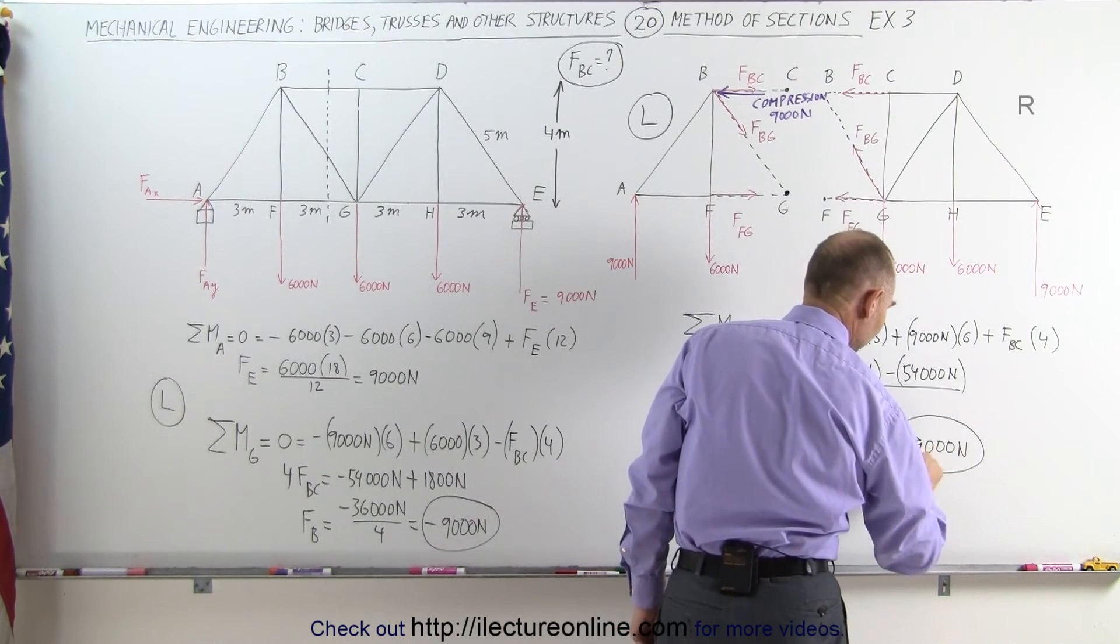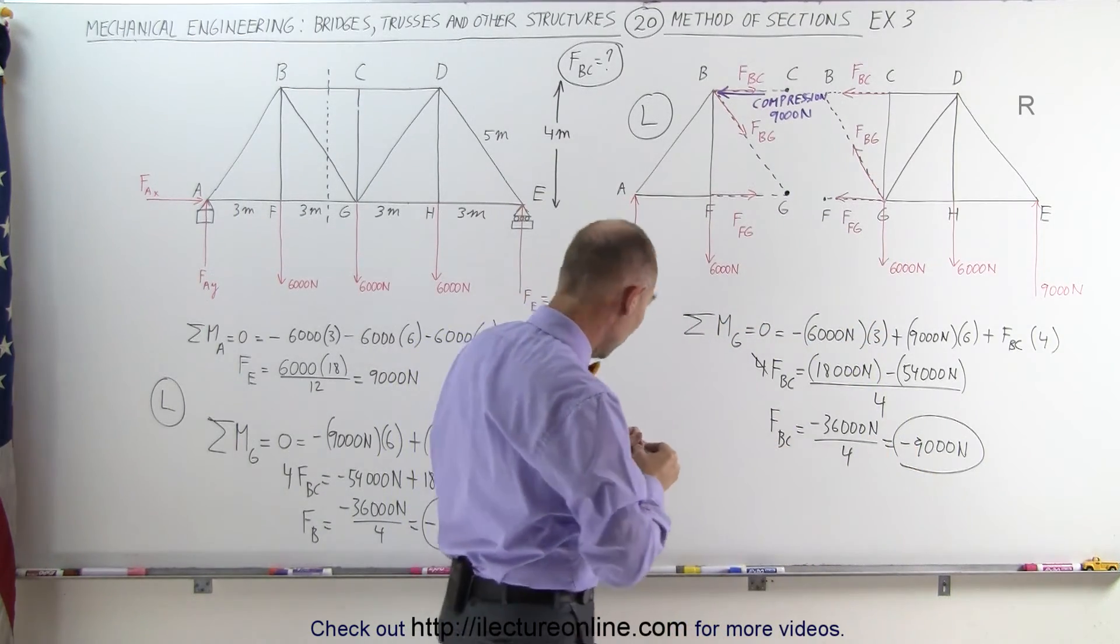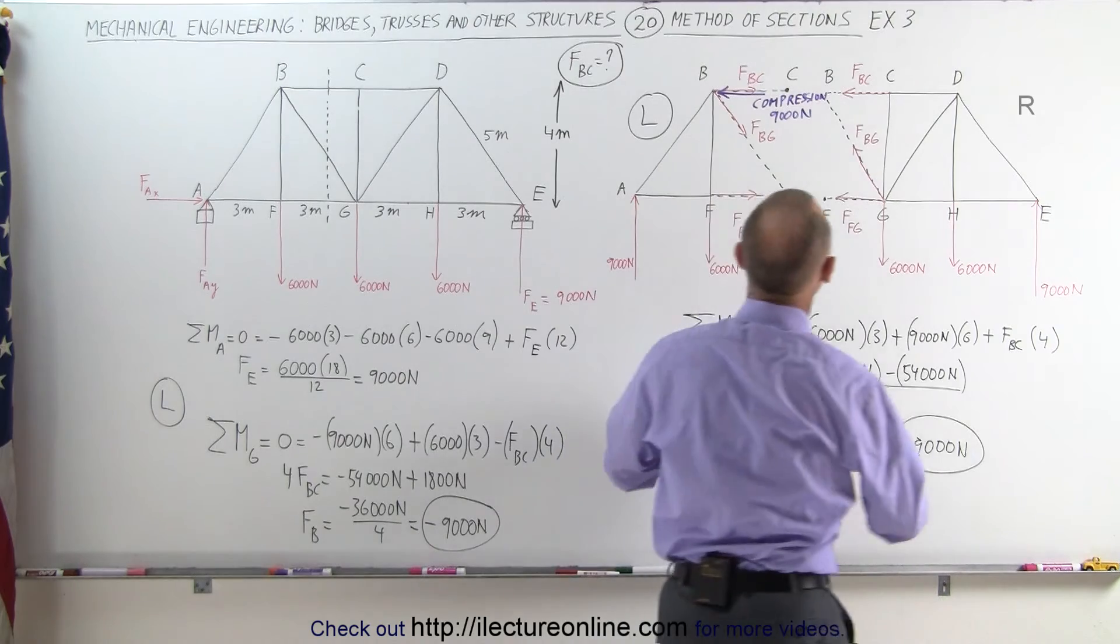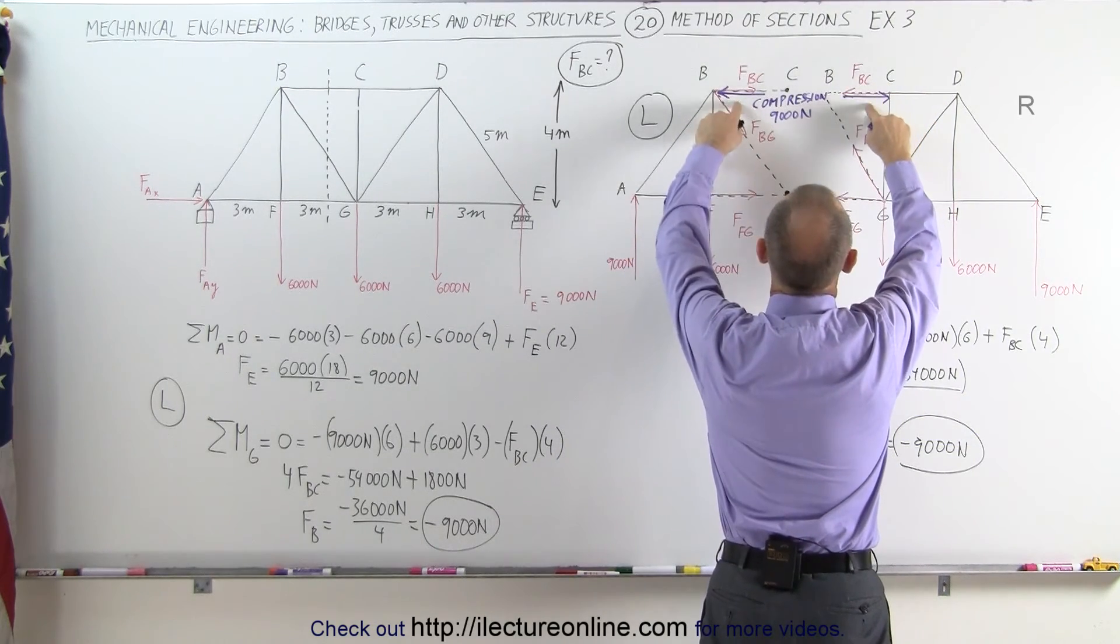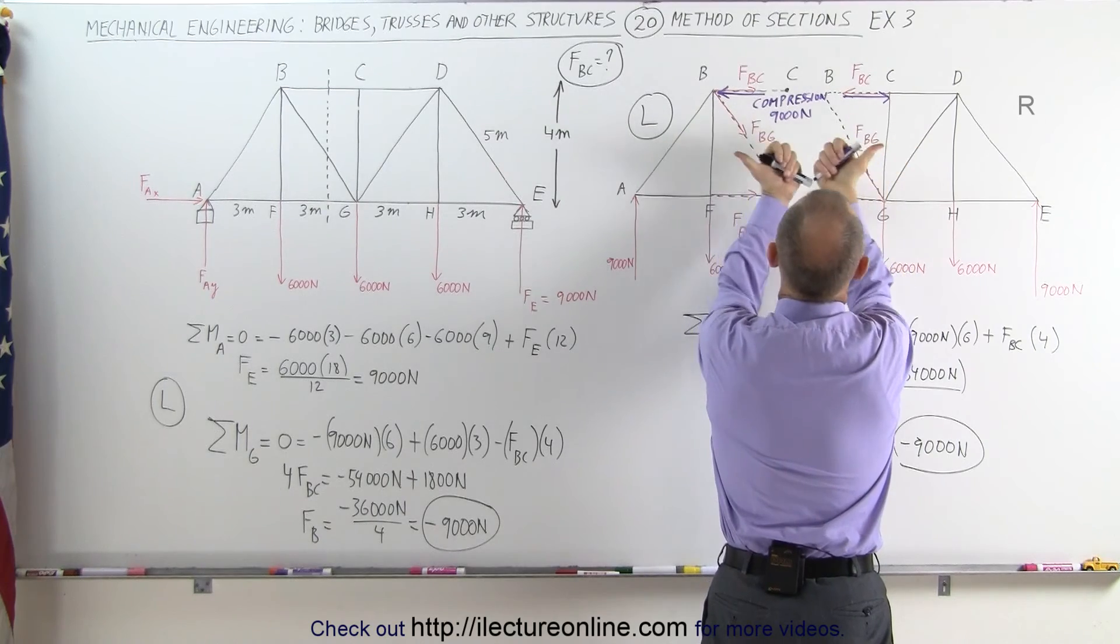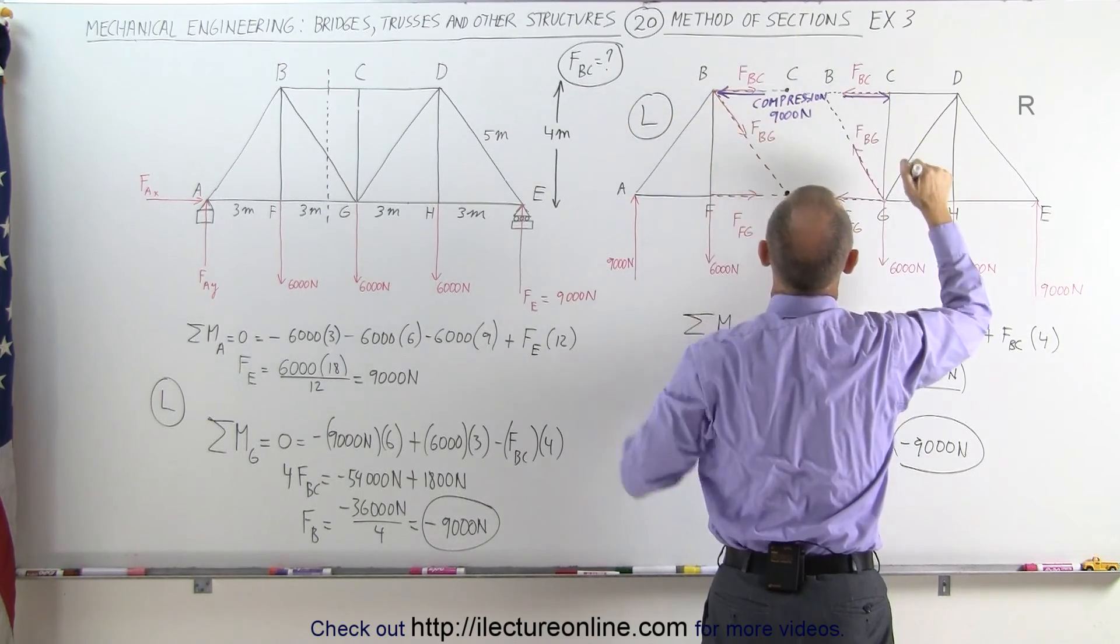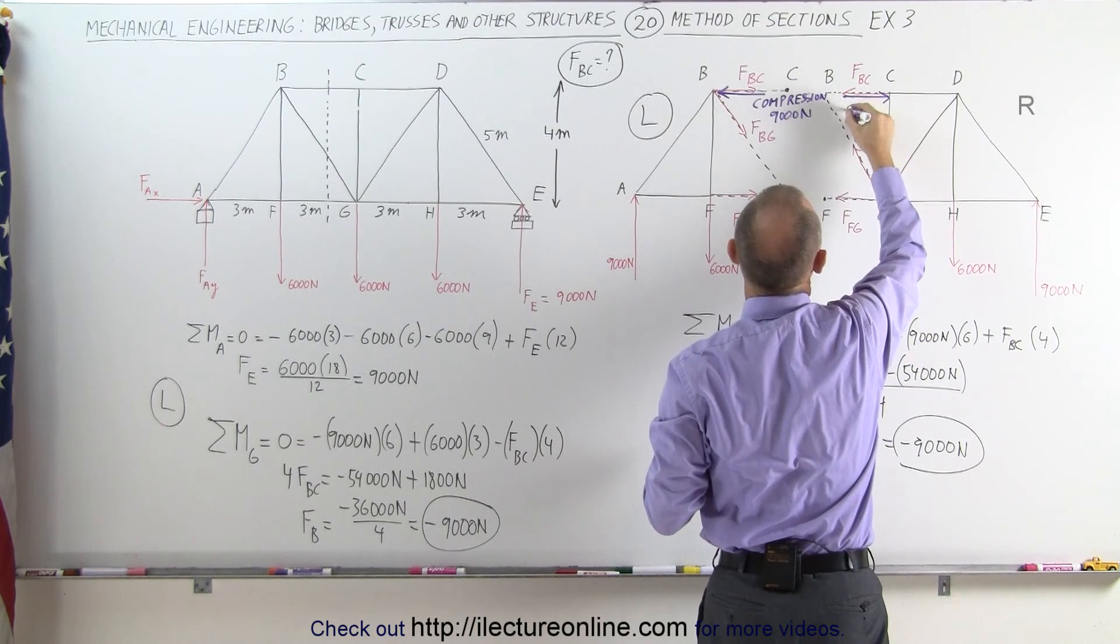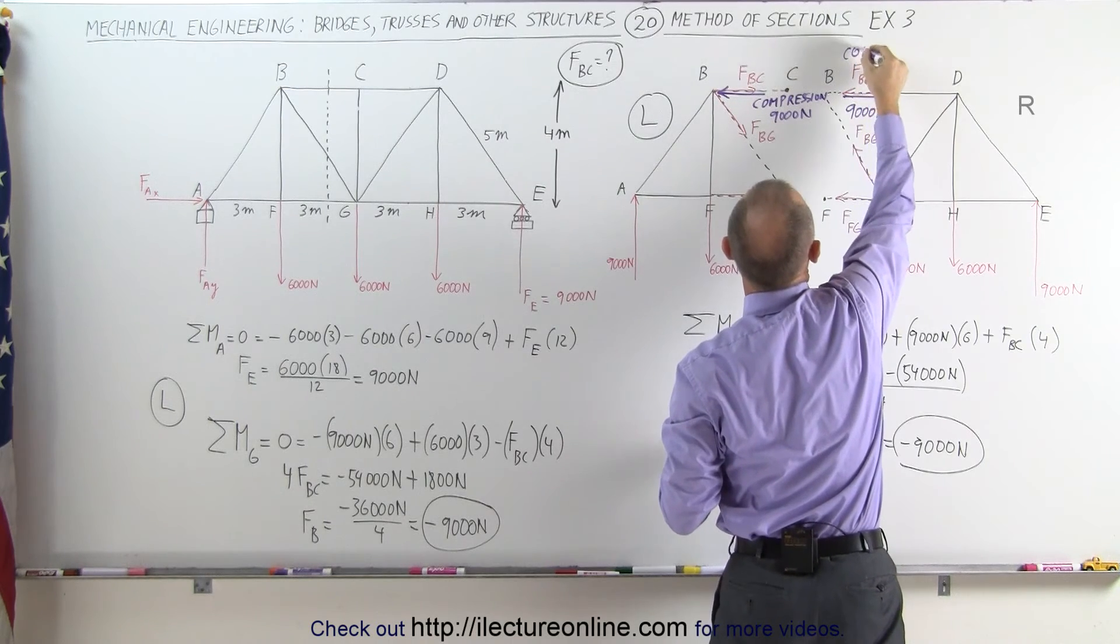Again, I get a negative answer. Negative answer means that I drew the direction of that force in the wrong direction, which means that the force is actually in the opposite direction, which indicates a force of compression. That's why the member pushes actually against the two joints that are joining them. And that would be a positive 9,000 Newtons in the direction drawn. So it's also a force of compression.